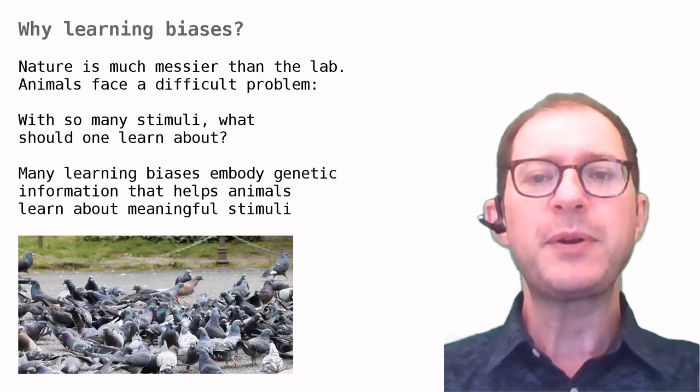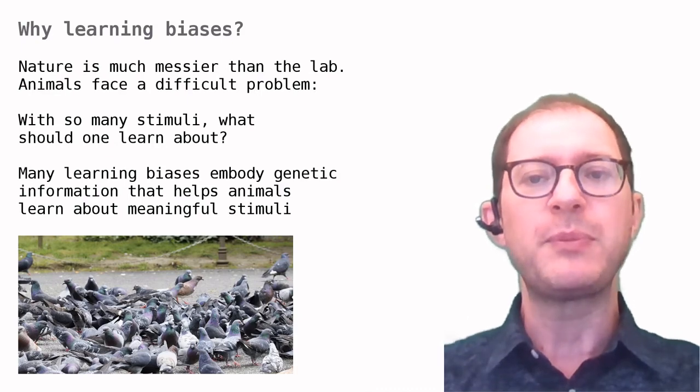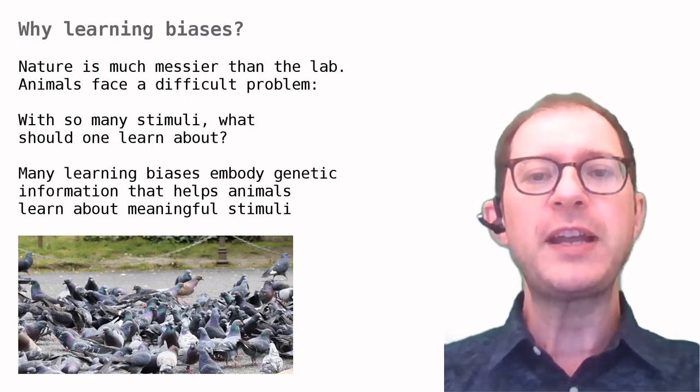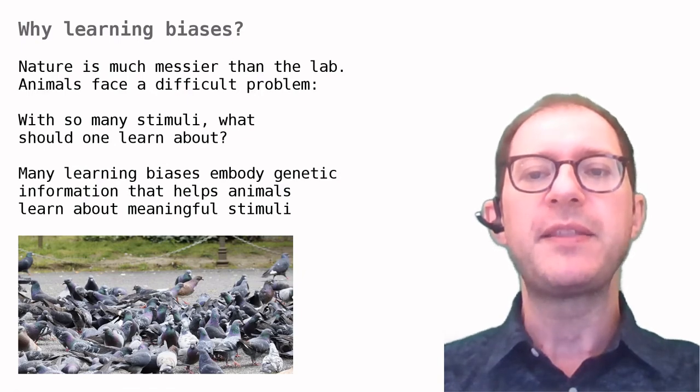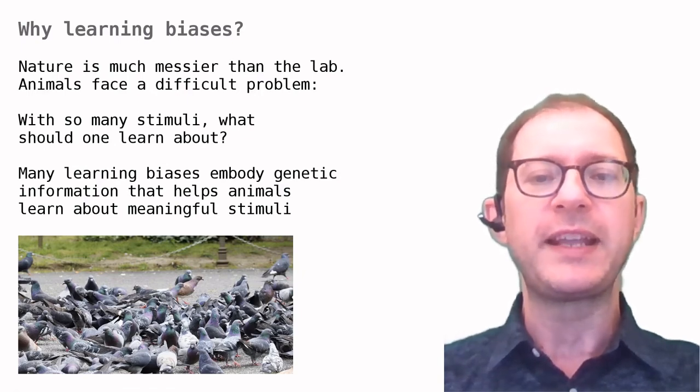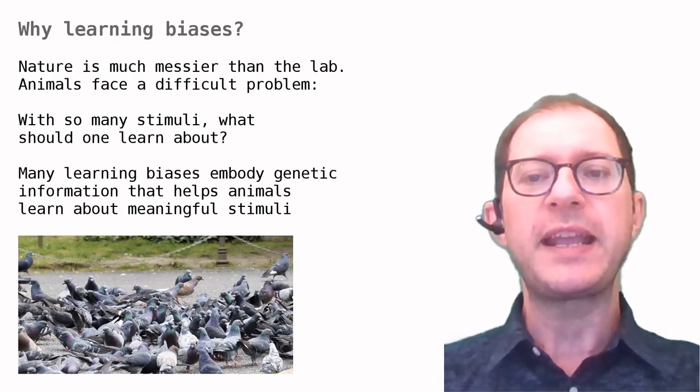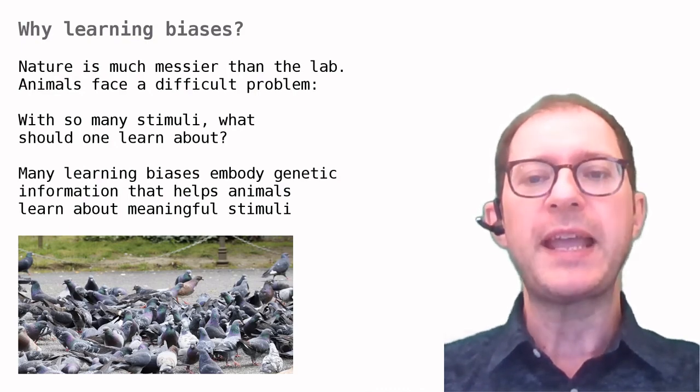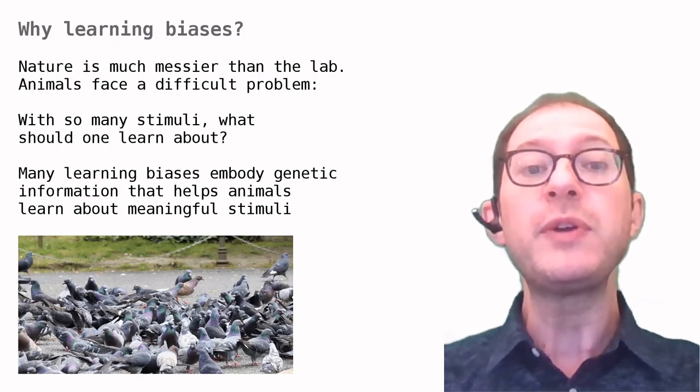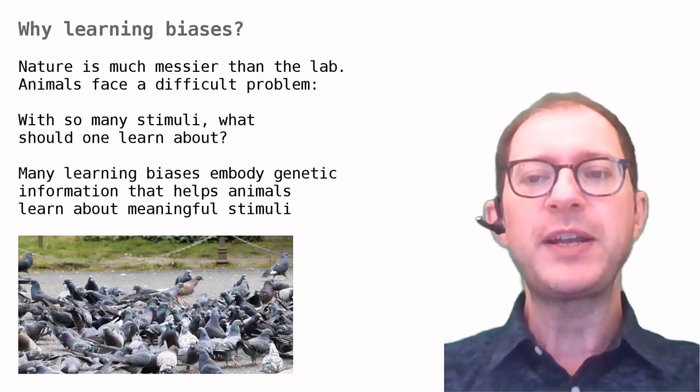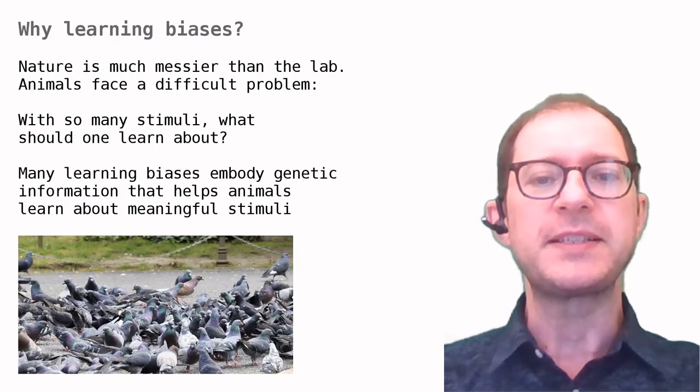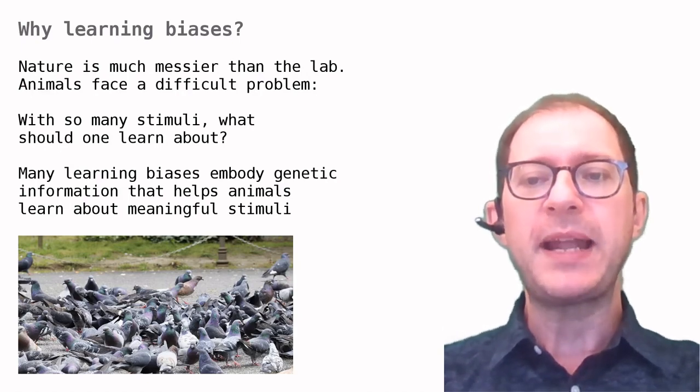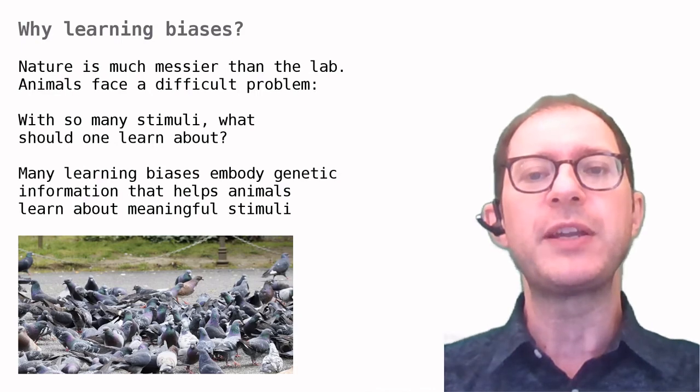You may remember one of the first lessons, in which I said that behavior often depends on both learned and genetic information. Overshadowing is a perfect example. In that lesson, I also said that learning has evolved so that the animal can gather knowledge about its environment that the genes cannot possibly have. Another side of the coin is that when the genes do have some knowledge, they might try to pass it on to the learning system, so to speak, and help animals learn about the right things, even in a messy situation.